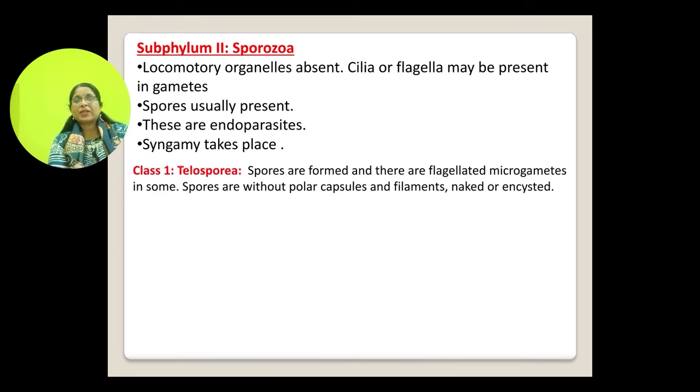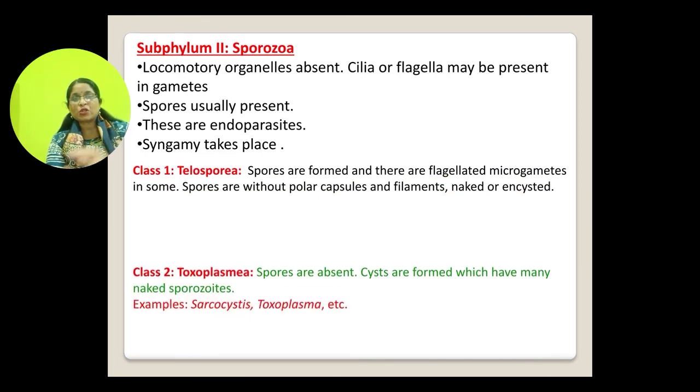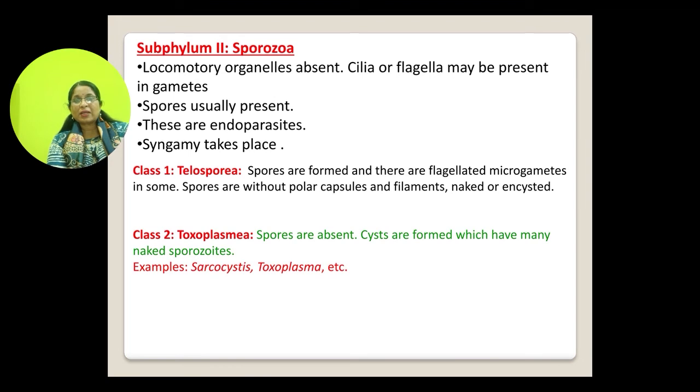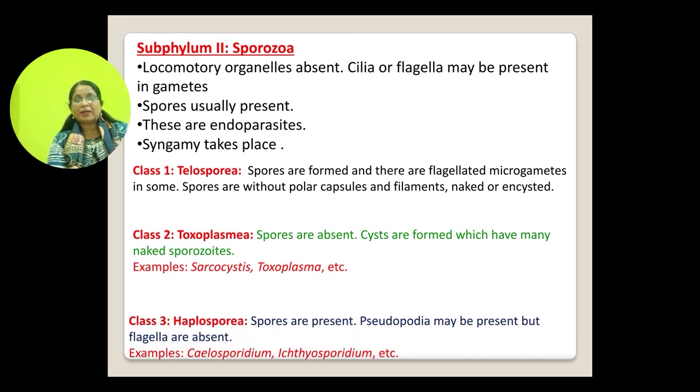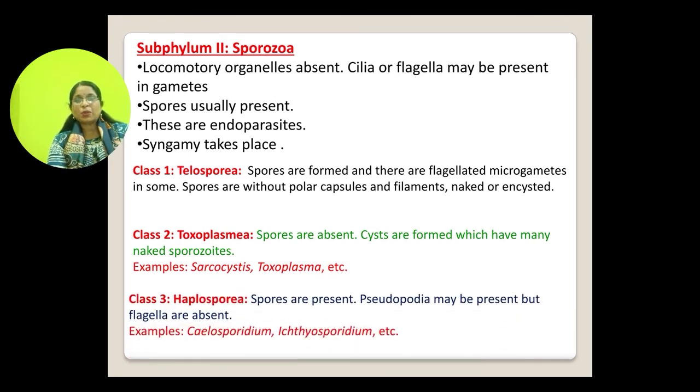Sporozoa has three different classes: class Telosporia, class Toxoplasma, and class Haplosporia.